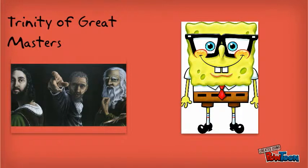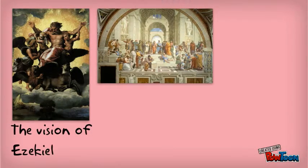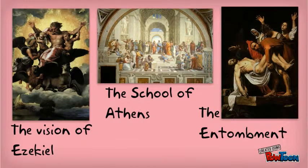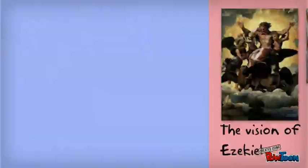He used to learn and take whatever he liked from other artists. His most famous pieces of art were the Vision of Ezekiel, the School of Athens, painted from 1510 to 1511, and Entombment.